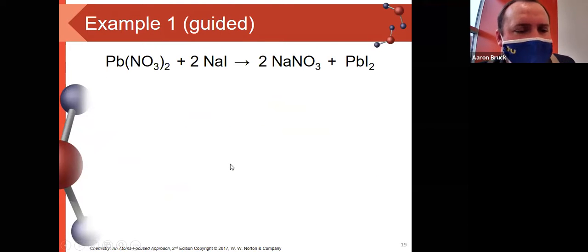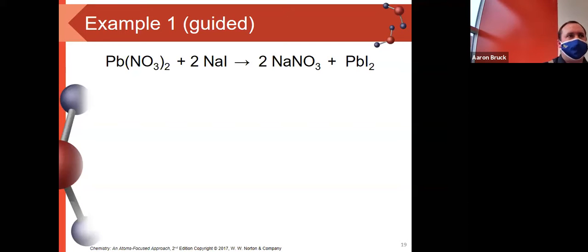Let's look at an example first. With this first example, we've got Pb(NO3)2 reacting with 2 NaI to make 2 NaNO3 and PbI2. Now, our first step was to write the balanced molecular equation. Anyone see any issues with what's written on the board here as far as balancing or correct formulas? No, it's all right. So step one, check it off.